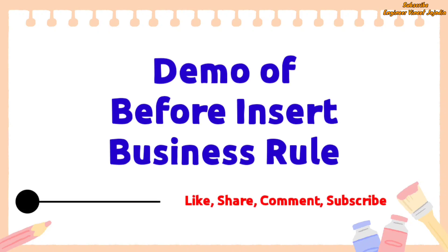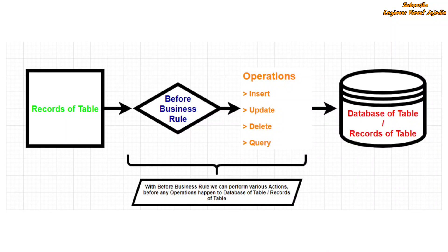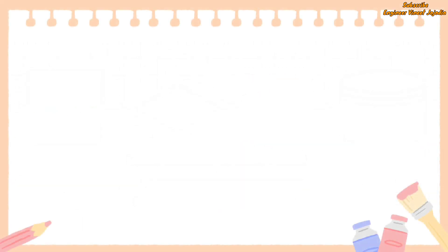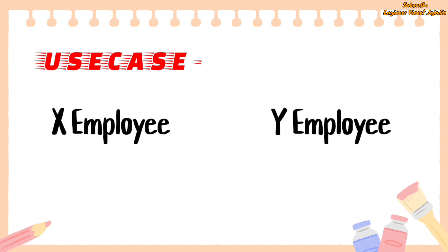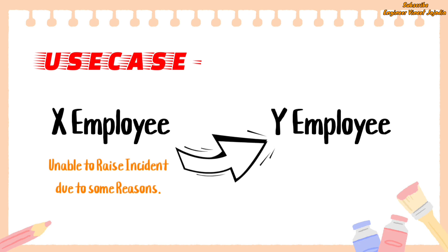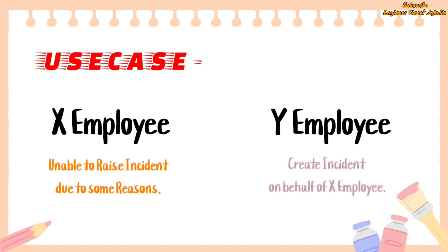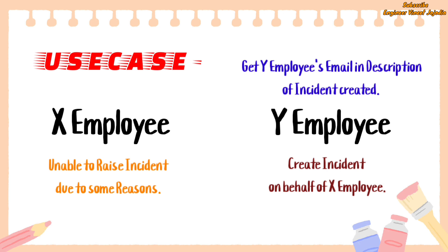Let's see the demo of the Before Insert business rule. In this demo we are going to perform some actions before we insert a record in a table. For the demo we are going to use the incident table. The use case assumes there are two employees, X and Y, working in the same company. X is unable to raise an incident for certain reasons, so X calls Y to raise the incident on behalf of X. Once Y raises the incident, we have to get Y's email in the description so the incident team knows it was raised on behalf of the caller.